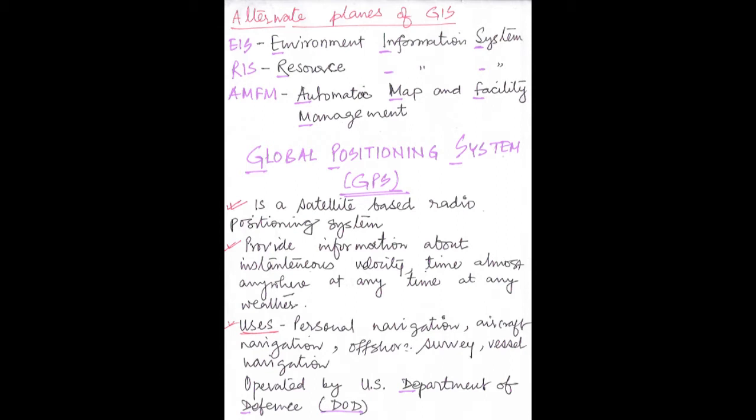GPS works independently of any weather — it doesn't matter if it is raining or cold, GPS still works. At any weather, any time, anywhere it provides information. Its uses include personal navigation, aircraft navigation, offshore survey, vessel navigation, and various other uses. It is widely used nowadays. GPS is operated by the US Department of Defense, that is the DOD.